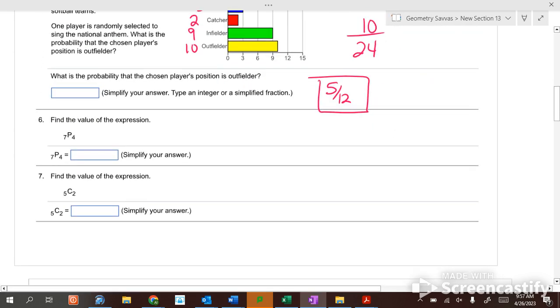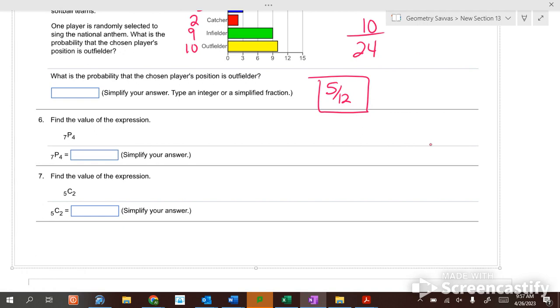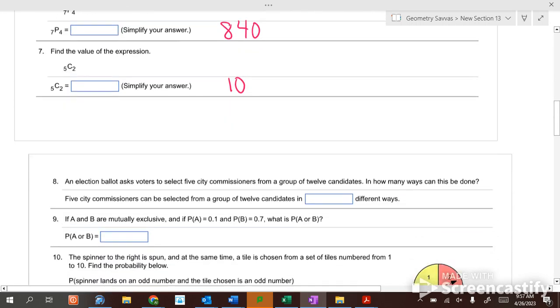Okay. Find seven P four. The permutation of seven P four is eight hundred and forty. Find five C two. Ten. Combinations are usually a lot lower than permutations.